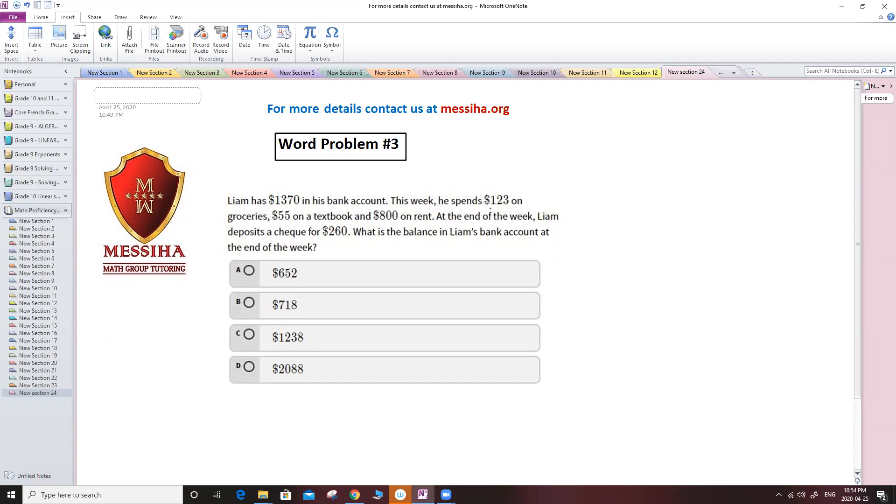This week he spent $123 on grocery, $55 on a textbook, $800 on rent. At the end of the week Liam deposits a check for $260. What is the balance in Liam's bank account at the end of the week?